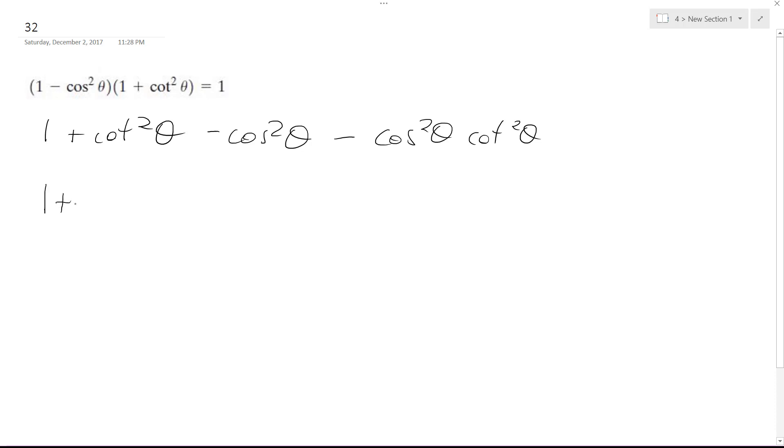So I end up with 1 plus cosine squared theta over sine squared theta minus cosine squared squared theta, minus cosine squared theta times cosine squared theta over sine squared theta.